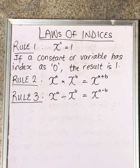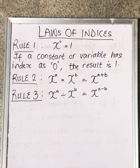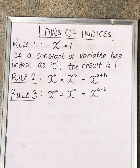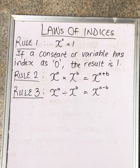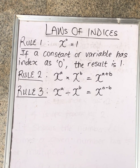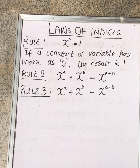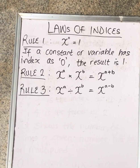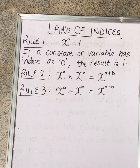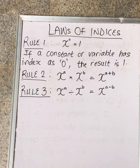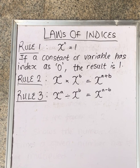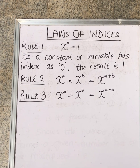Rule number three says when two of the same base are dividing each other with different powers, we subtract the powers. Note the difference between rule number two and rule number three: rule two involves multiplication and rule three involves division. Two same bases but different powers — you have to know what operation applies to each.